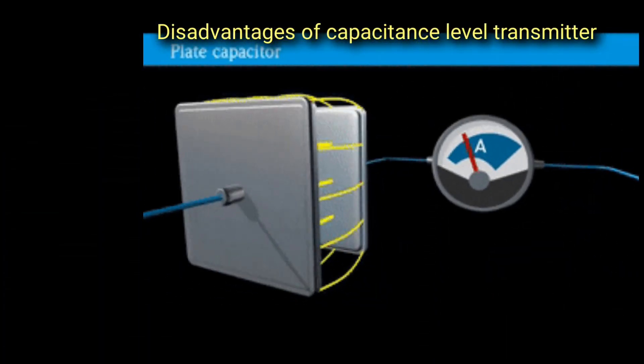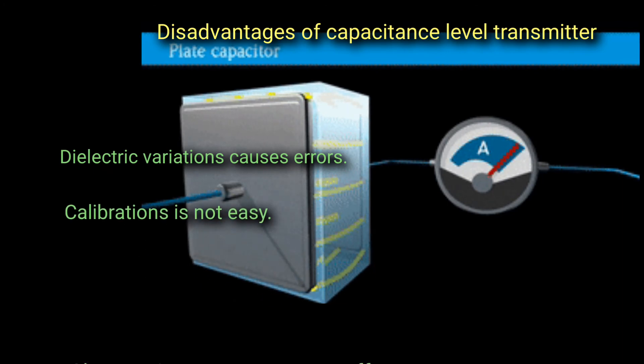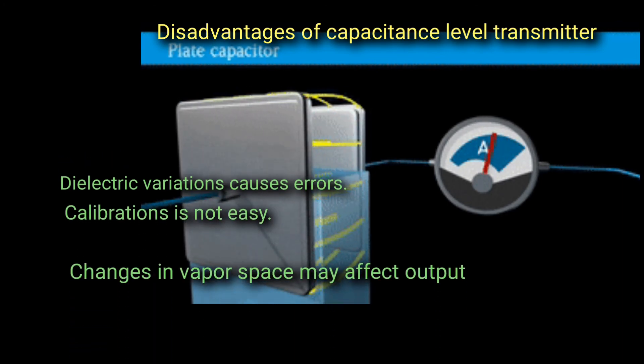Disadvantages of capacitance level transmitter: Dielectric variations cause errors. Calibration is not easy. Changes in vapor space may affect output.